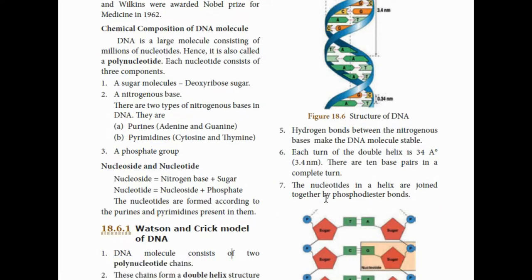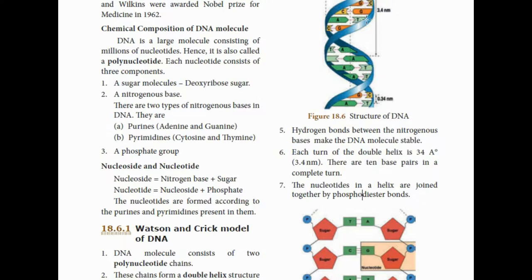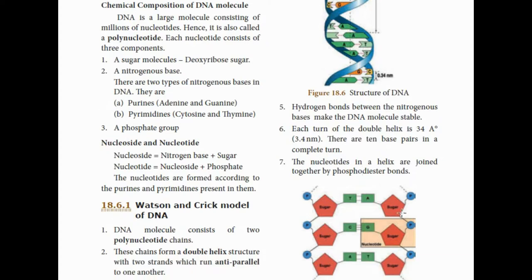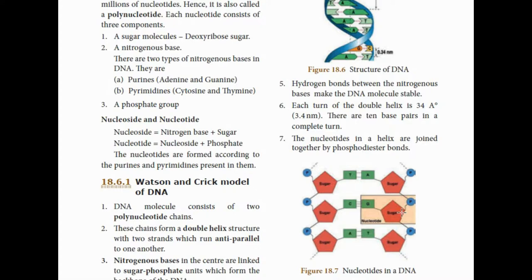One complete turn of the DNA helix has a distance of 3.4 nanometers, and this contains 10 base pairs. The nucleotides in the helix are joined together by phosphodiester bonds. All nucleotides are attached via these phosphodiester bonds.